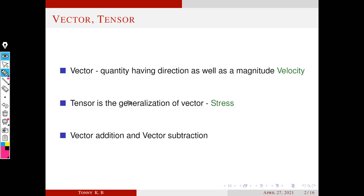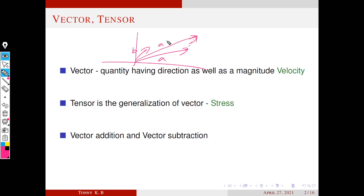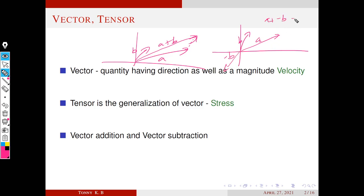Next we know vector addition and subtraction. Suppose we have two vectors a and b. To define a plus b, we move vector b to the end of a — then this resultant vector is defined as a plus b. Similarly, to define a minus b, we consider minus b (which is b reversed), then a plus (minus b) gives us a minus b.